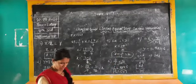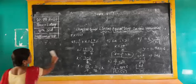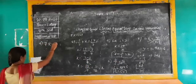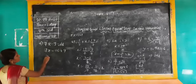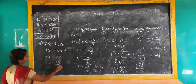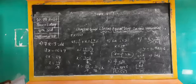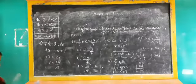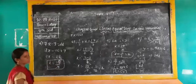Next question: 7x minus 9 is equal to 16. Bring minus 9 to the right side as plus 9. So 7x equals 16 plus 9, which is 25. Therefore x equals 25/7.